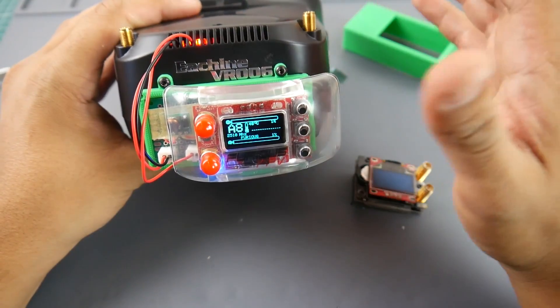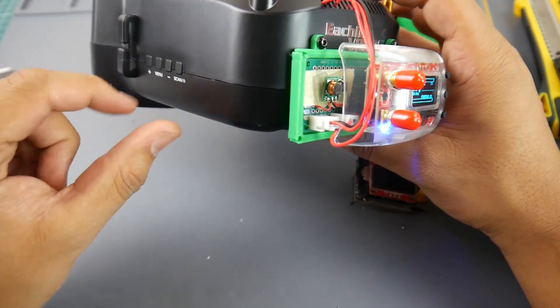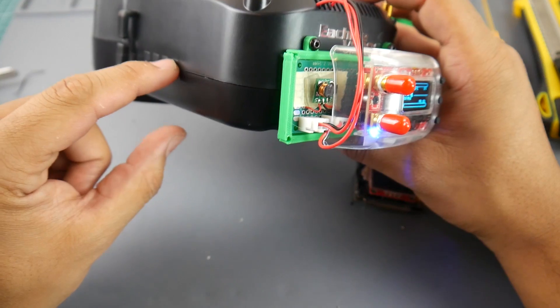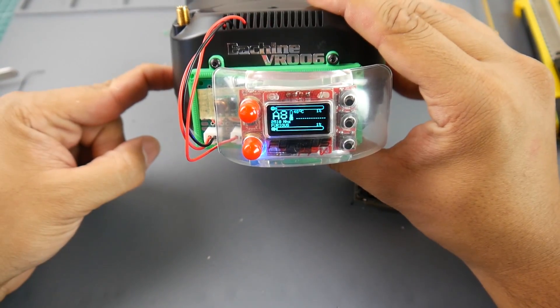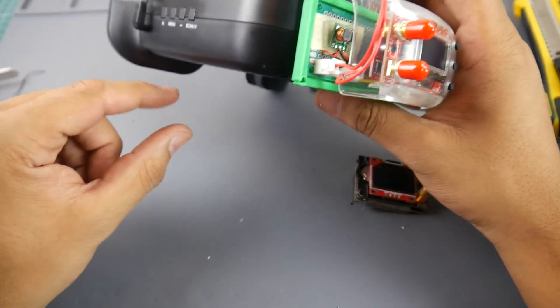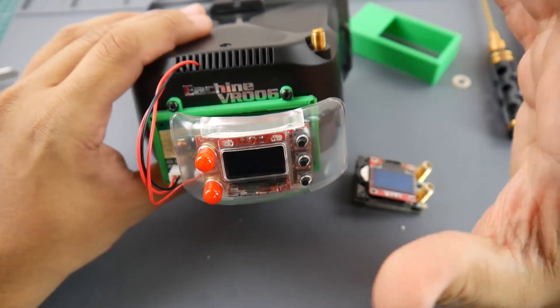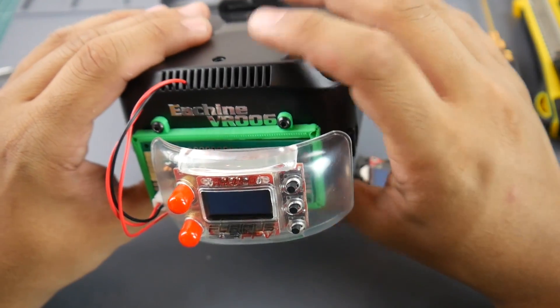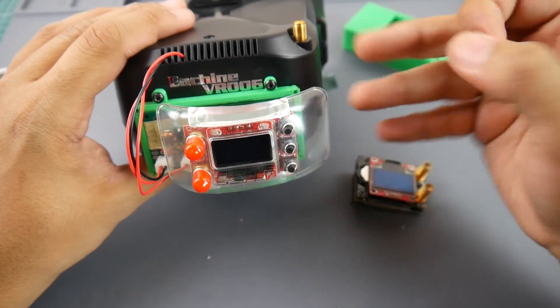It'll take any kind of Fatshark module which is really nice and it's absolutely proper with the 3D printed parts. And if you turn off the goggle, the module turns off.